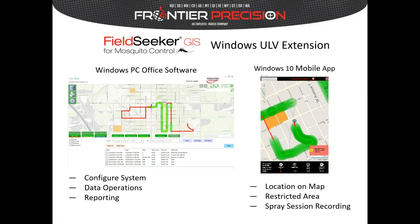The Windows ULV software comes in two parts: the office software installed on a local computer, and a Windows 10 mobile app. You use the office software to configure the system with your employee information, truck identification, sprayer types, and chemical information. You can also define your no-spray or restricted areas and then select the distance from them at which the driver starts getting a warning.